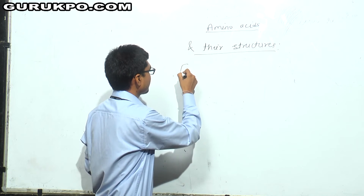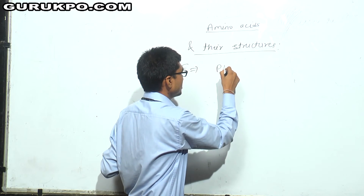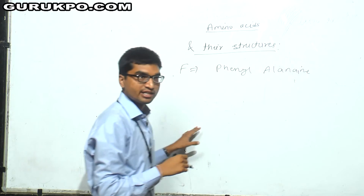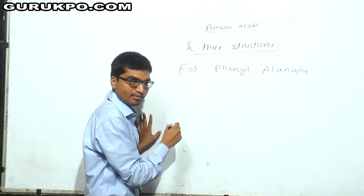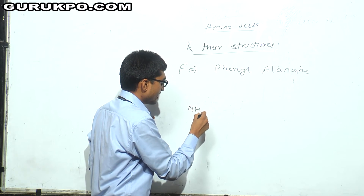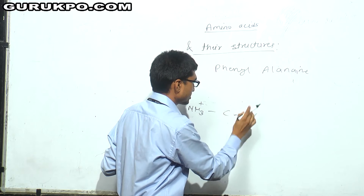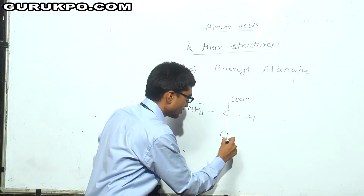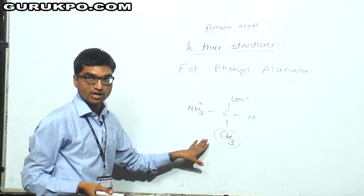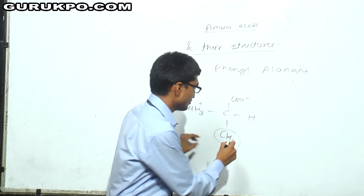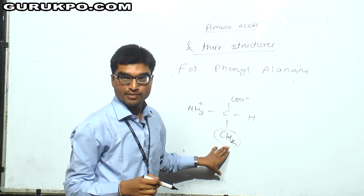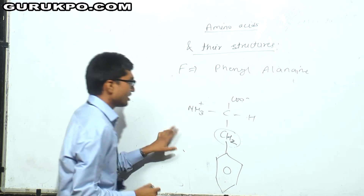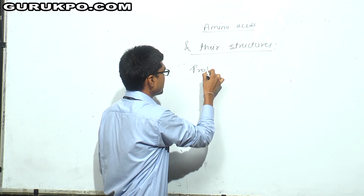The next amino acid is F — that is phenylalanine. Phenylalanine can be easily formed from the amino acid alanine. The structure of alanine has COO⁻ and a CH3 group at the R position. When I replace this hydrogen with a phenyl group (C6H5), I get phenylalanine.